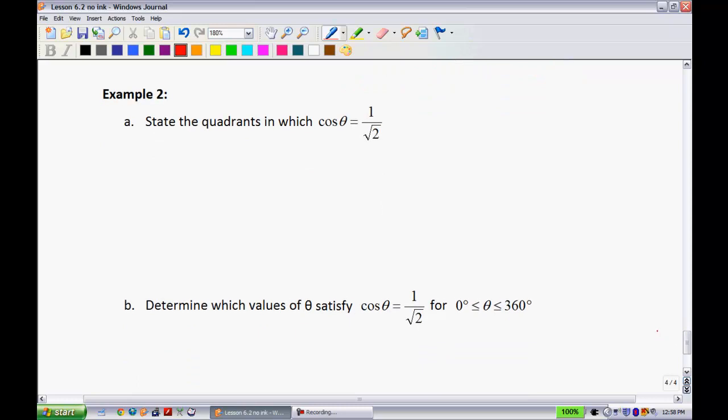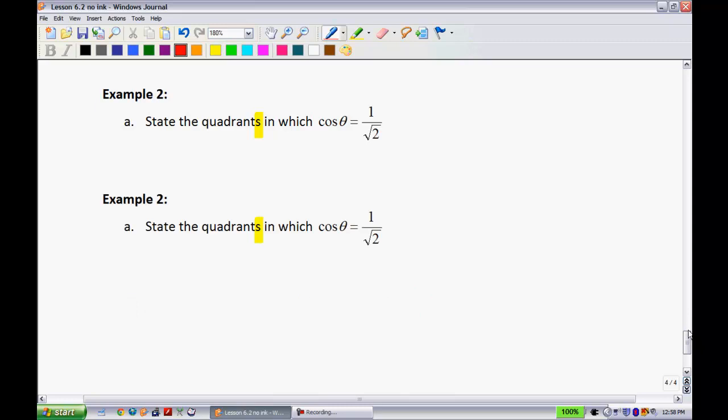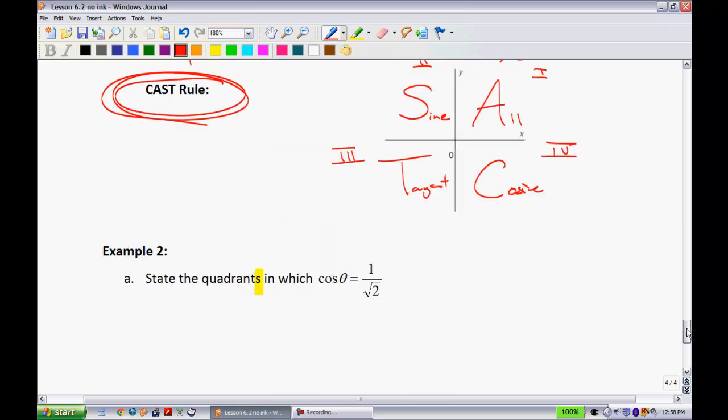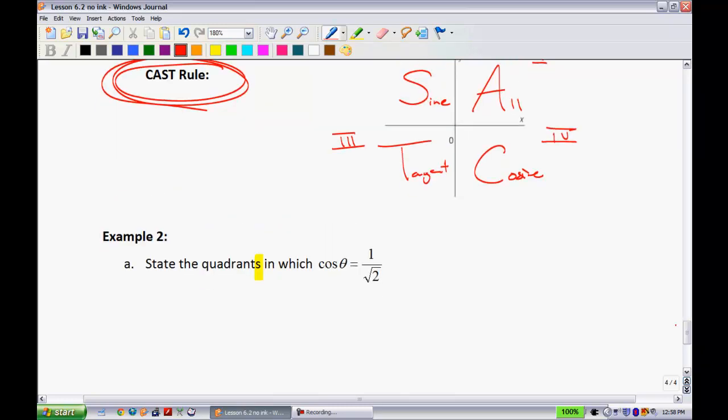Example 2, state the quadrants. Notice how I have the S right there. There's going to be more than 1. In which cosine of theta is equal to 1 over root 2. Well, what quadrants is cosine positive in? Well, using my CAST rule, it's going to be, of course, positive in quadrants 1. That's where everything is. And in quadrant 4. So, we would say quadrants 1 and quadrant 4.